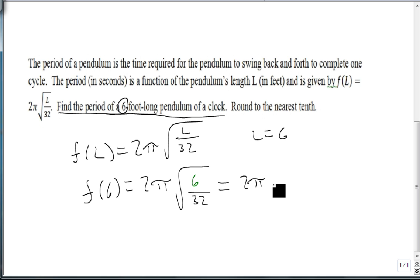which is 2 pi times the square root of 3 over 16, 2 pi square root of 3 over 4, which reduces to pi square root of 3 over 2.